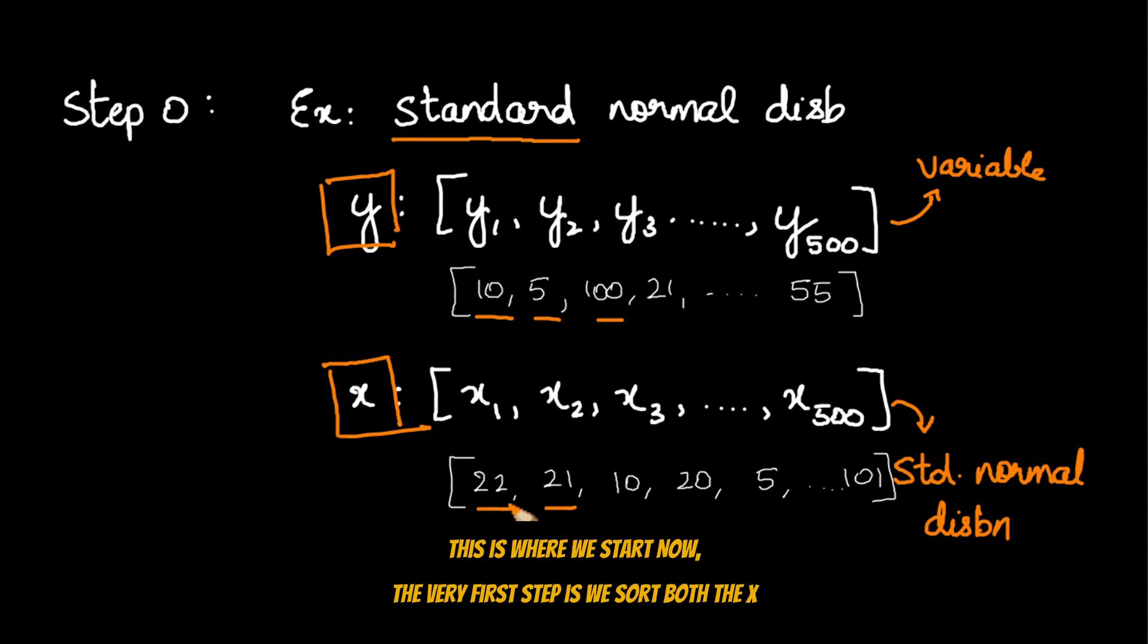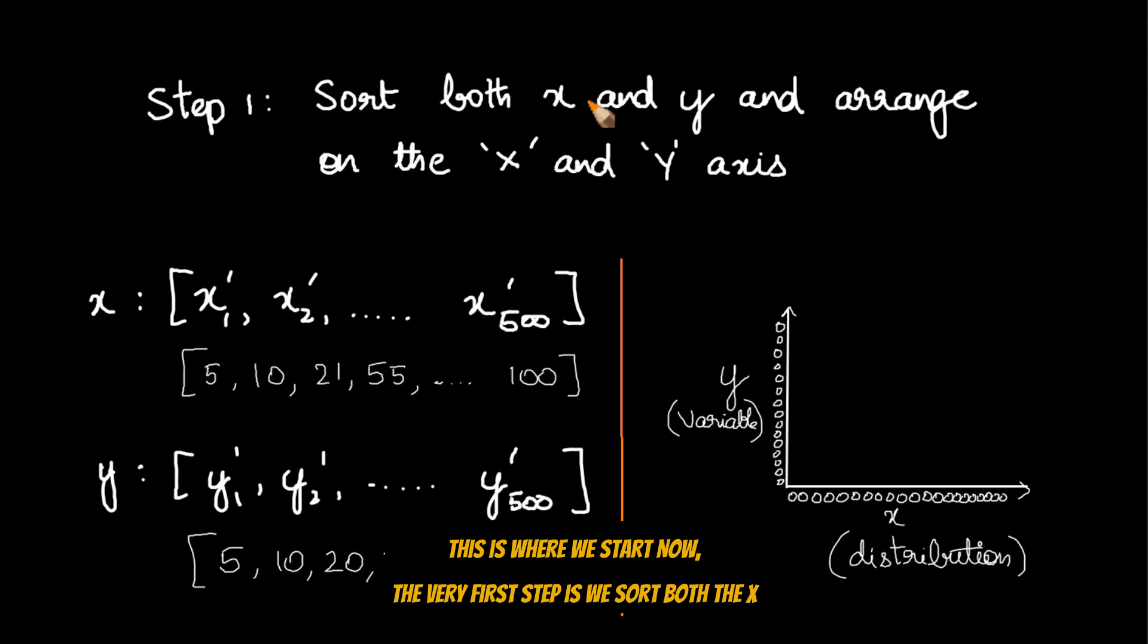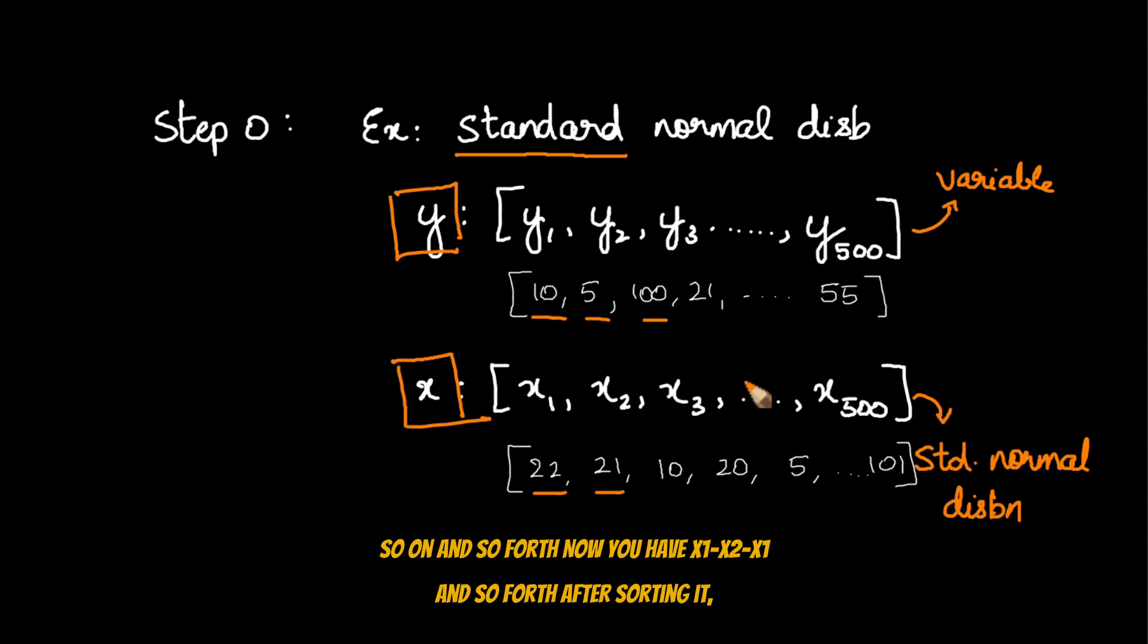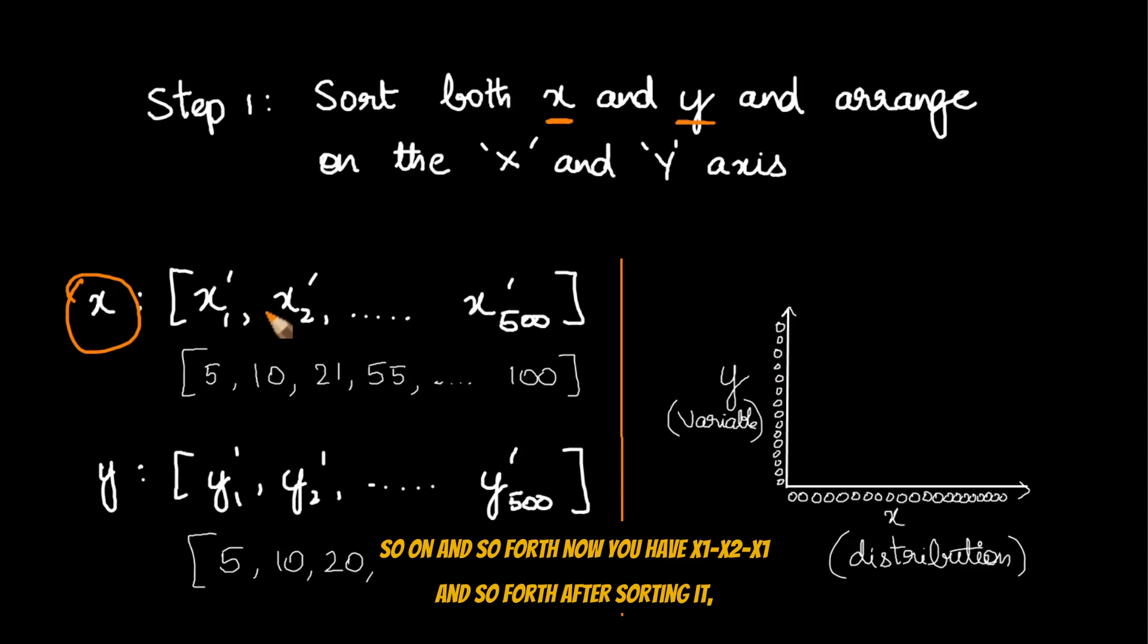This is where we start. Now the very first step is we sort both the x and the y and arrange them in the x and the y axis respectively. So as a result of this, you have the x variable after sorting it, you have x1 dash x2 dash previously. Now after sorting it, all the numbers are in increasing order. Likewise, the same applies for the y variable also, all the numbers are in increasing order.